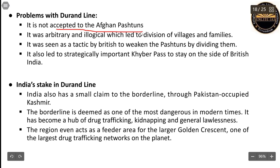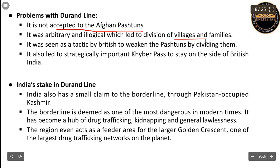Problems with the Durand Line: it is not accepted by Afghan Pashtuns. It was arbitrary and illogical, similar to the Radcliffe Line, which divided villages and families. It was seen as a British tactic to weaken the Pashtuns by dividing them on both sides. It also strategically kept the Khyber Pass on the side of British India.